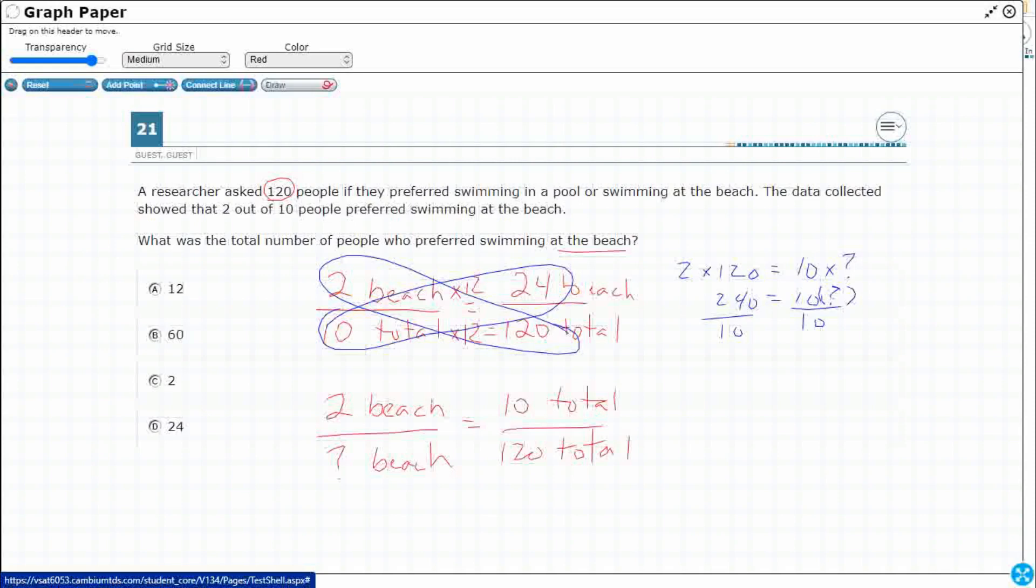And so you're thinking, we could do 2 times what makes 10? 2 times 5 makes 10. So let's multiply by 5. So I could say something times 5 equals 120. Well, you know what that is. That's going to be 24.